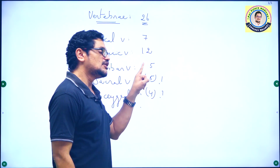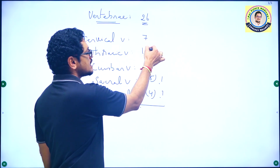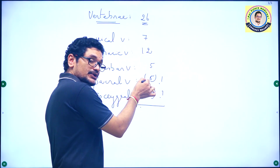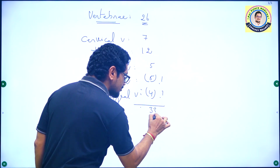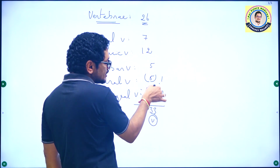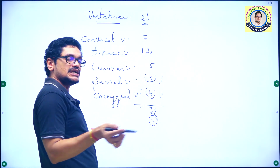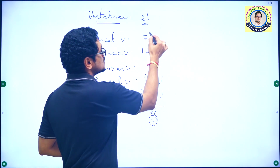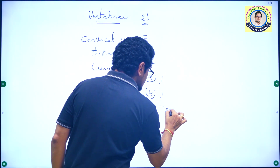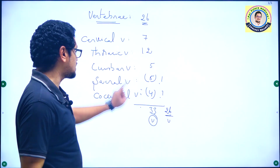If you take the count: 7 plus 12 is 19, plus 5 is 24, plus 5 is 29, plus 4 is 33 vertebrae when observing the newborn. But in the sacral and coccygeal regions, bones undergo fusion. So 7 plus 12 plus 5 plus 1 plus 1 equals 26 vertebrae in adults.